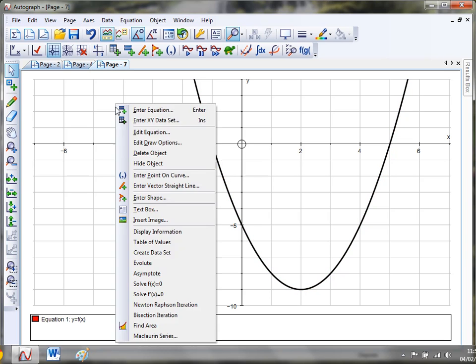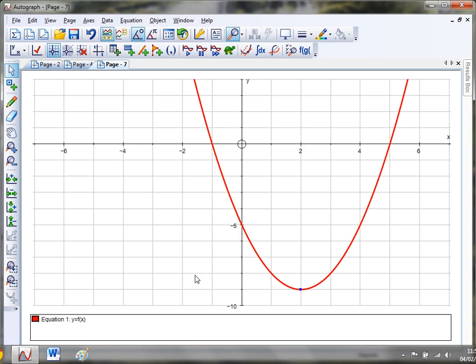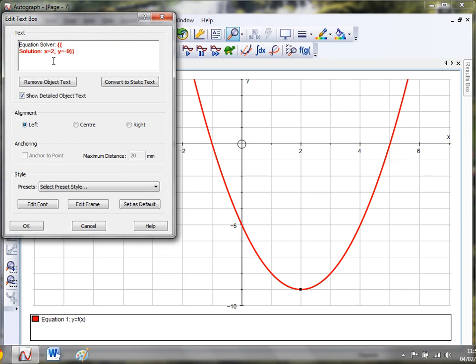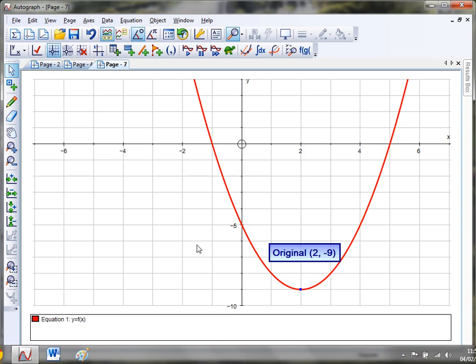What I'm going to do is click on this curve and right click, and just down the bottom here I get this option: solve f dash of x equals zero. Now for those of you familiar with calculus, that means Autograph is going to hunt down the turning point, the stationary point of this graph. So click OK and there it is, down there, that little blue dot. If I just give that a little click and go to text box, it's going to tell me the solution to that equation. But I don't actually want it as a solution, so if I remove that show detailed object text, I get it now as a coordinate. I'm just going to remove that equation solver and call it original. I'm going to go for a bit of ice blue, click OK, and there it is.